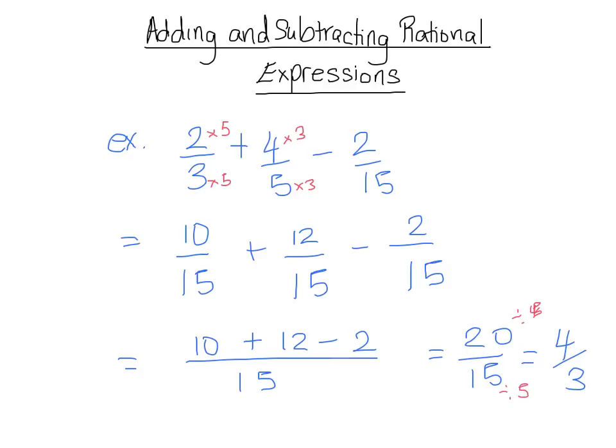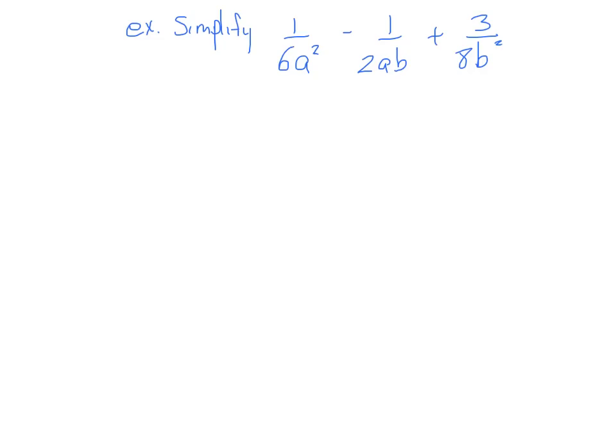Let's move on to something more challenging with variables. We worked with a numerical example because that is exactly what we'll be doing even with variables. We're going to look for the lowest common multiple of our denominators, which have both numbers and variables. The numerical parts are 6, 2, and 8, and the lowest common multiple of those is 24.